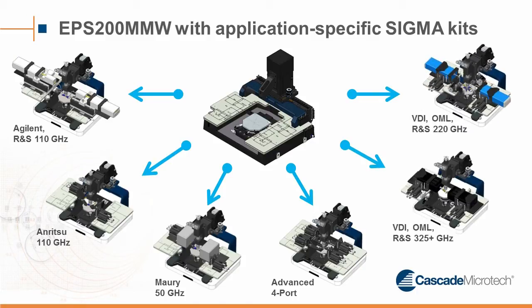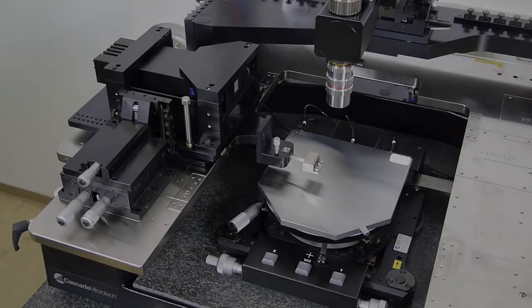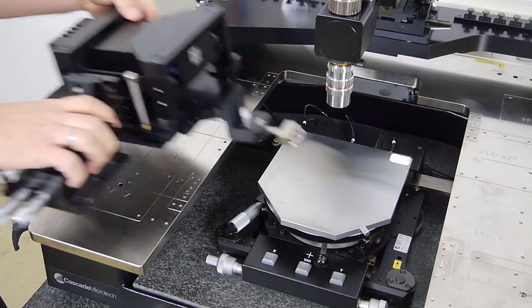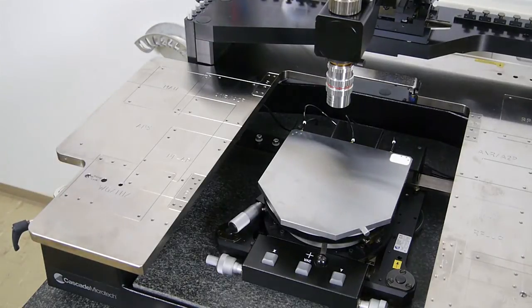For example, one waveguide Sigma kit for 60 to 90 GHz banded or one sub-Terahertz Sigma kit for a 325 to 500 GHz application. This is very convenient as changing between the applications is a matter of seconds.